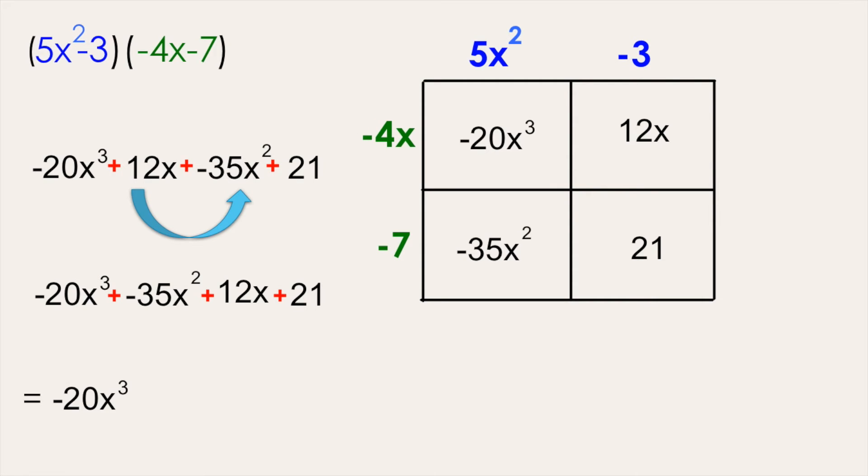Lastly, bring down your terms that are already simplified. Negative 20x cubed can just be brought down. But we want to simplify further this plus a negative 35x squared.